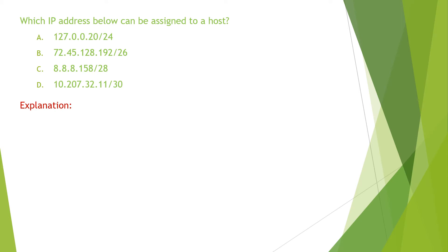The next question reads: which IP address below can be assigned to a host? First of all, we can easily recognize that 127 is a reserved address.